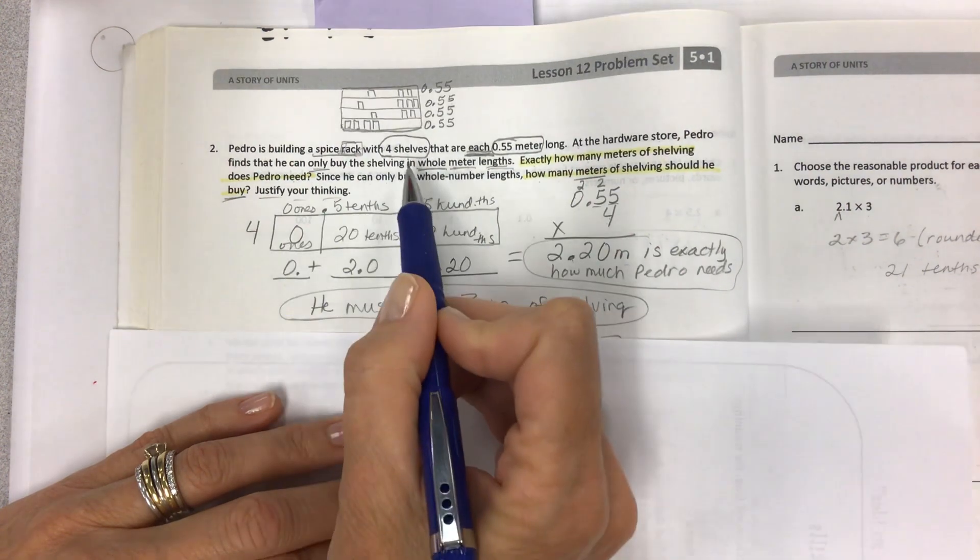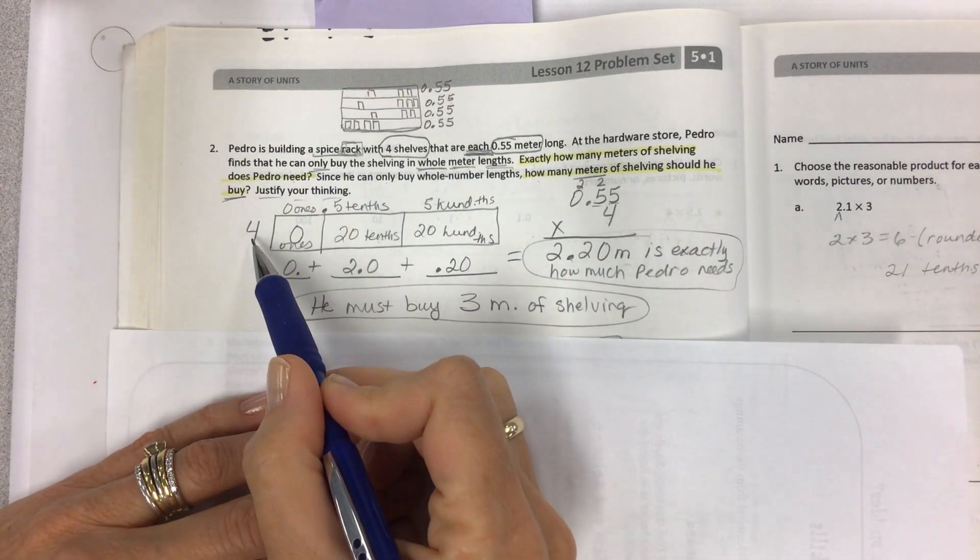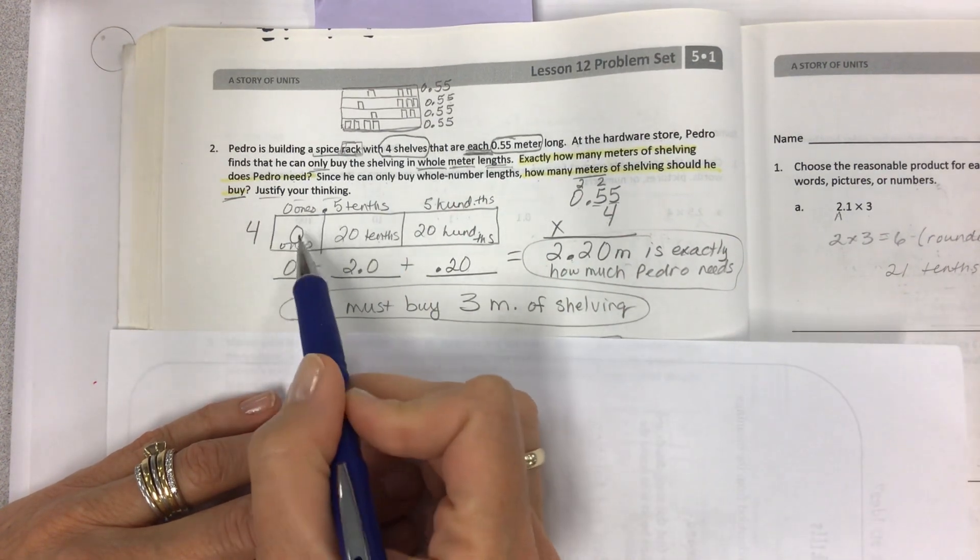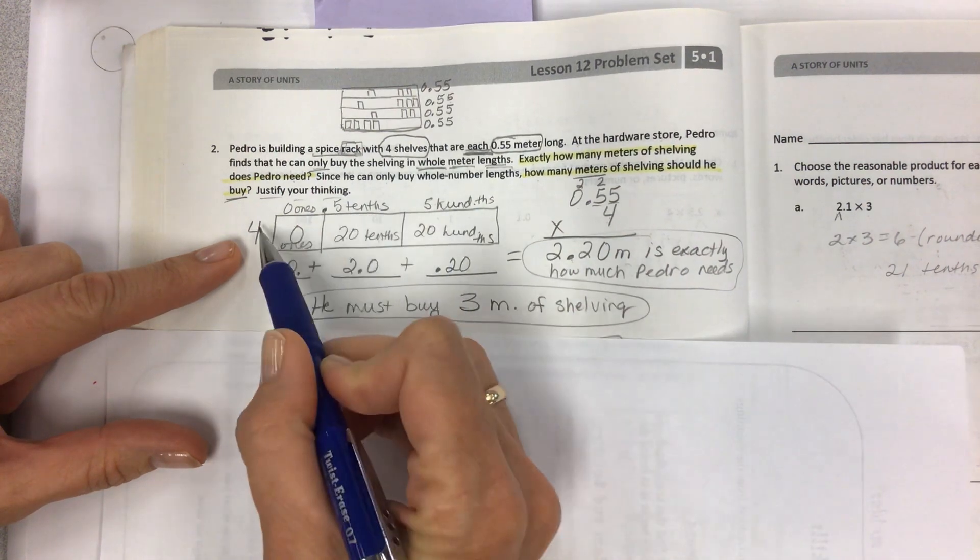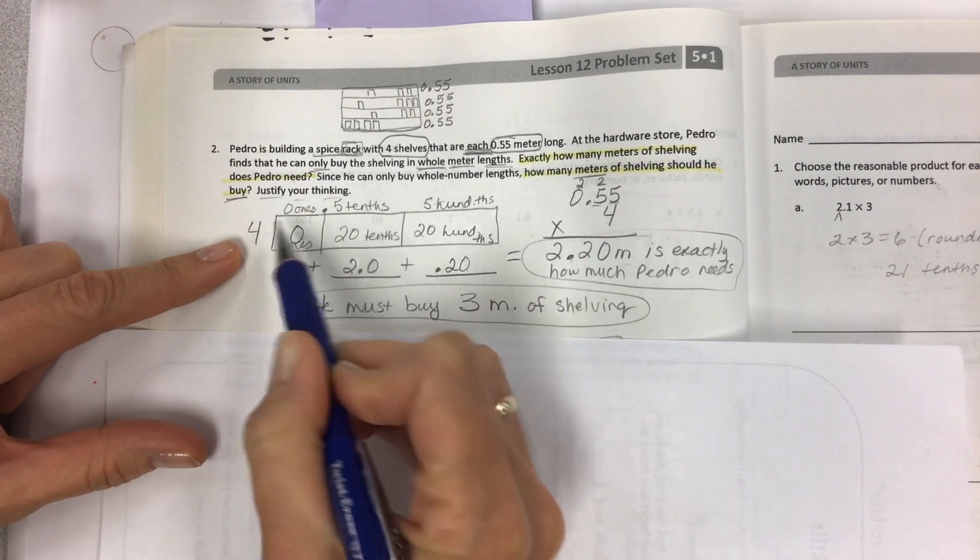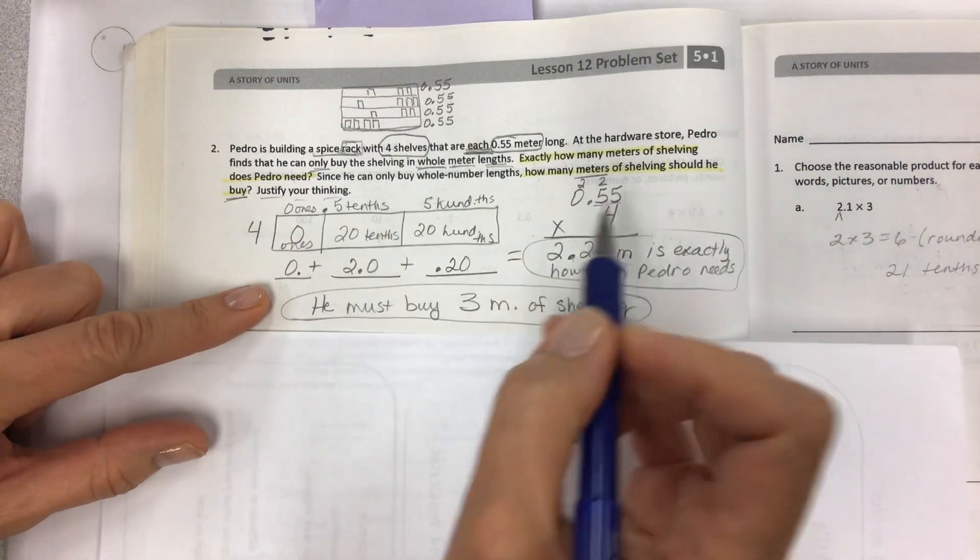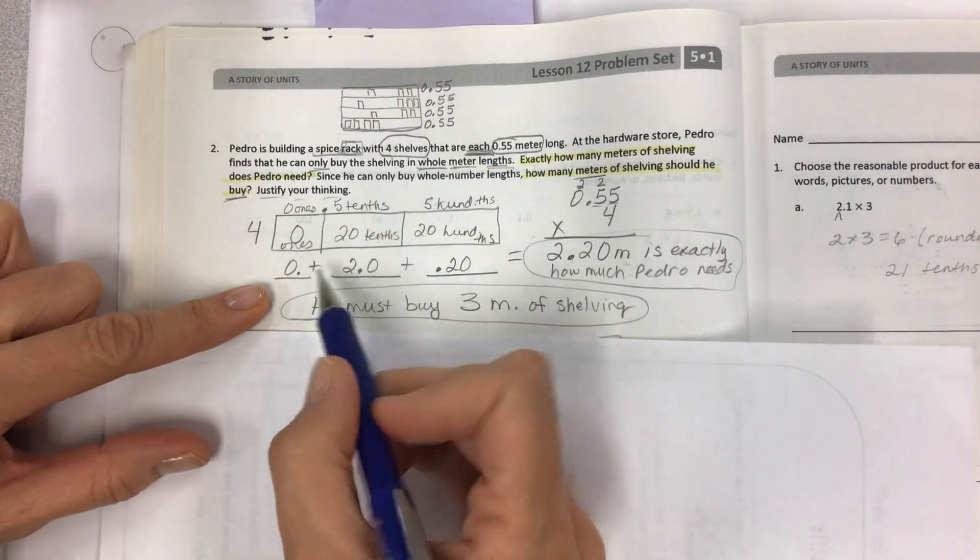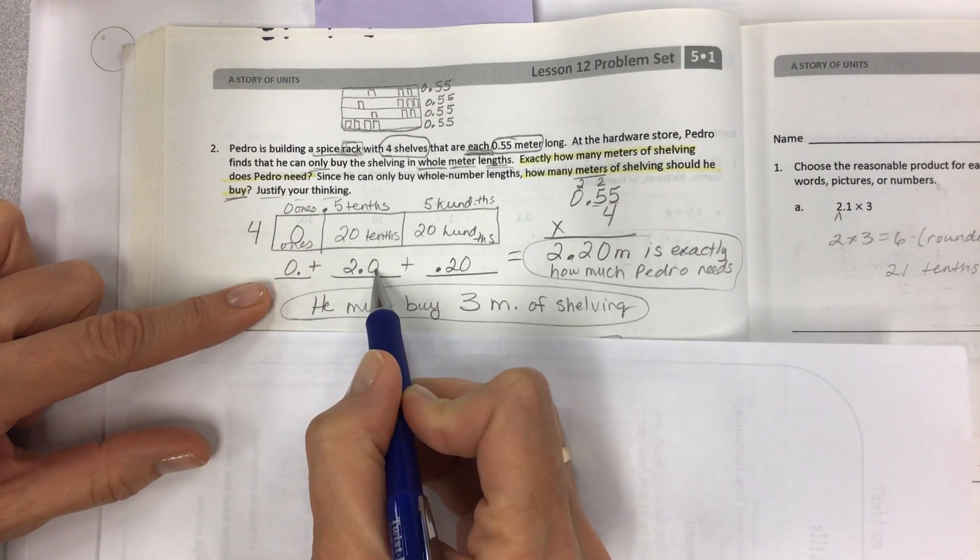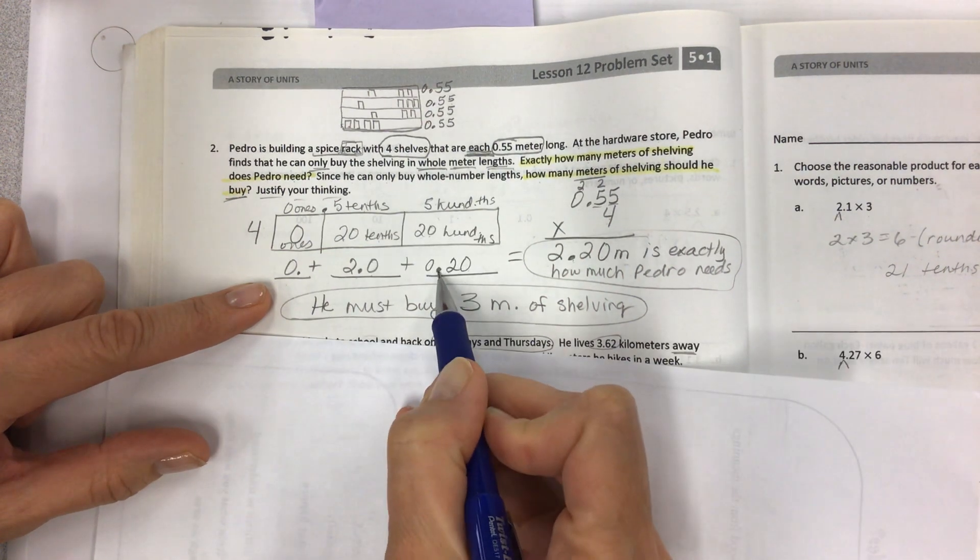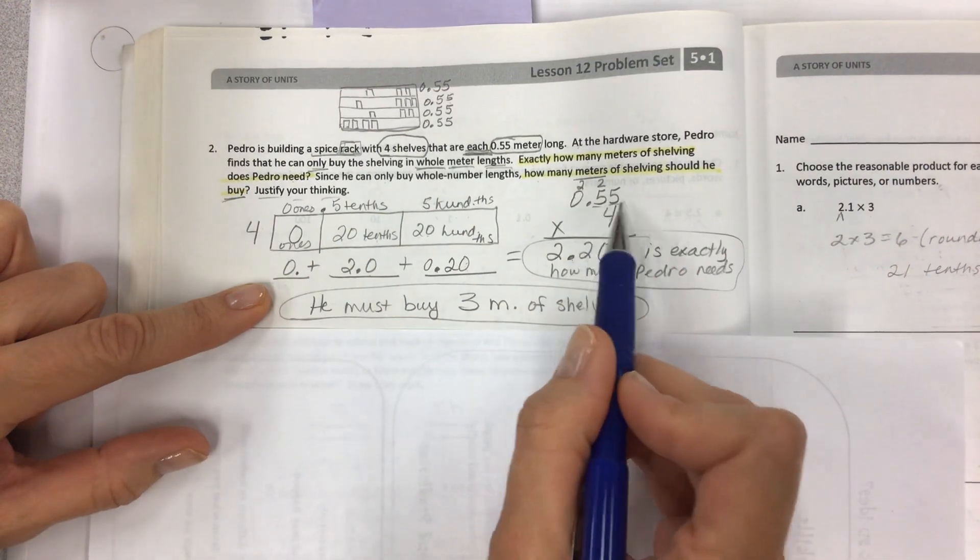And look at another question. Since he can only buy whole number lengths, how many meters of shelving should he buy? Then you have to justify your thinking. So when you set it up, you can do the 55 hundredths times four like we did yesterday and today. So set it up in the area model. 4 times 55 hundredths. You don't need this here. It's just here as a crutch to help you remember to put the zero in the ones place. Write your unit form up on top. 5 tenths, 5 hundredths. 4 times 5 tenths is 20 tenths. 4 times 5 hundredths is 20 hundredths.